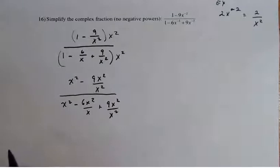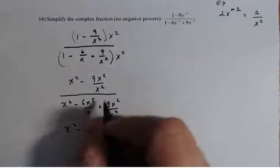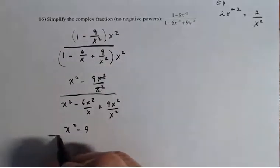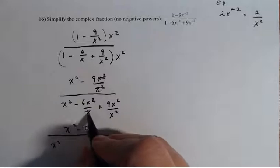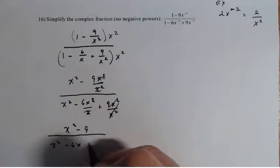And now I'm going to simplify that. So I have x squared minus 9 because those guys cancel. And in the denominator, I have x squared. One of these cancels minus 6x. And then both of those cancel plus 9.